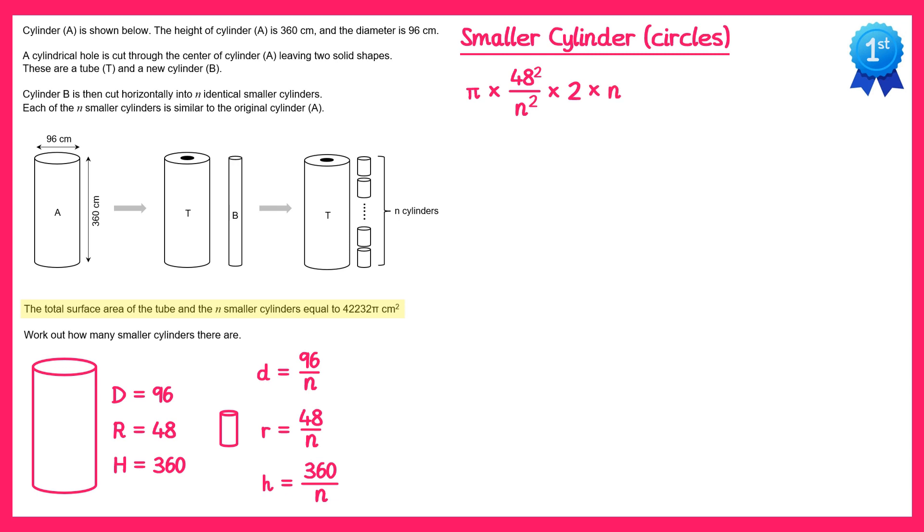From here we can cancel one of the n's out. So if we cancel this n on the end with one of the n's from the n squared, we end up with this. And if you multiply that 48 squared and the 2 and the pi, you end up with 4,608 pi over n. So that's for the circles.